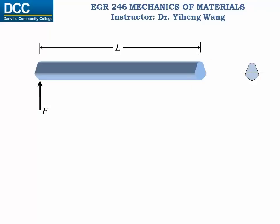We first determine the support reactions at the fixed support — we have a force and a bending moment. And if we choose this to be our x-axis, as we usually do, we can sketch the internal shear force diagram and the bending moment diagram.